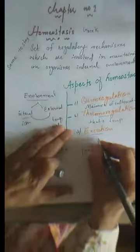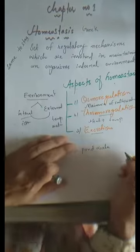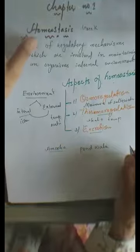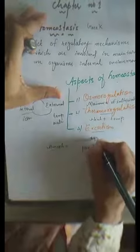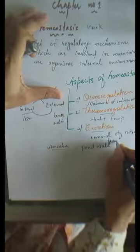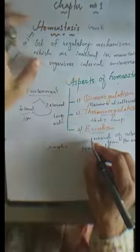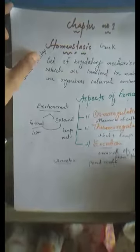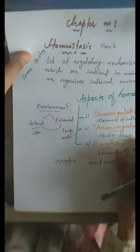Excretion means removal of nitrogenous waste materials from the body — that is called excretion. Homeostasis maintains the organism's internal environment. There is another system which can maintain our body, and this system is called the feedback system. The feedback system is involved in maintaining the body.